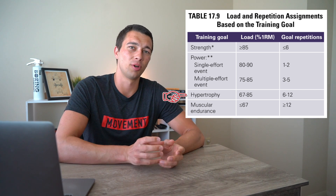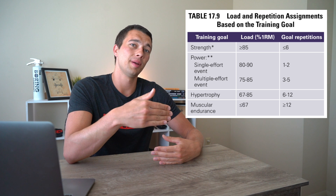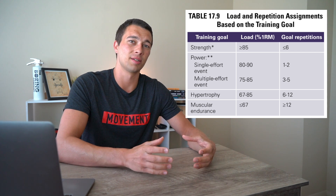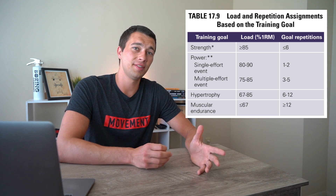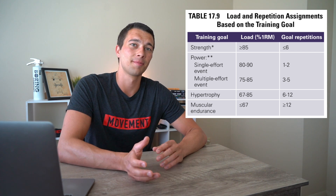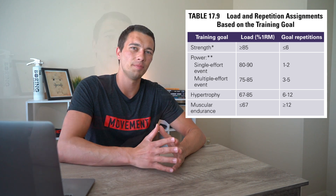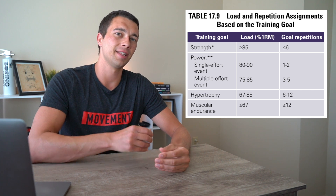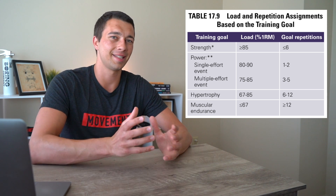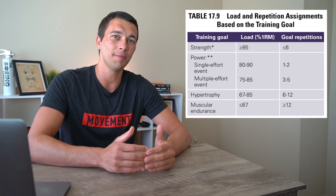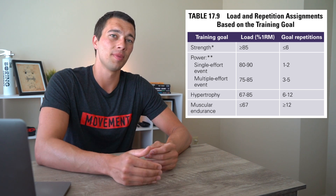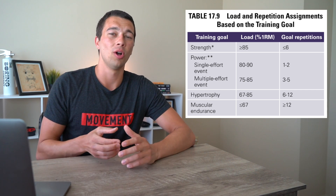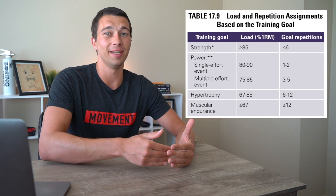For hypertrophy program design, there's a pretty big range — from 67% all the way up to 85% of one rep max and from six all the way up to 12 reps. For example, five sets of eight reps at 75% of one rep max is a solid choice. At 75% you could do ten reps, but we only program eight because we don't want the athlete to burn out on the first set. This is equivalent to about an eight out of ten RPE — typically one or two reps below their maximum.